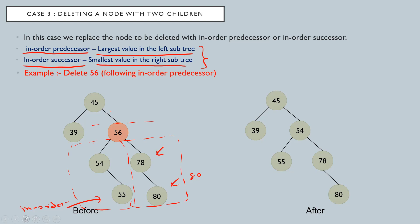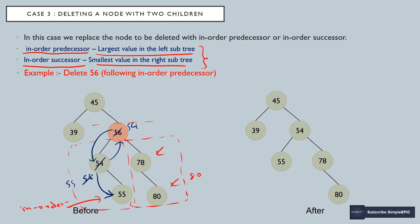Let's first see in-order predecessor deletion. We know the in-order predecessor is 55. What happens is 56 and 54 are swapped — 56 is replaced with 54 and 54 with 56. Then swapping happens again: 56 is replaced with 55 and 55 with 56. Now the node to be deleted is at the leaf, so we can simply delete it.